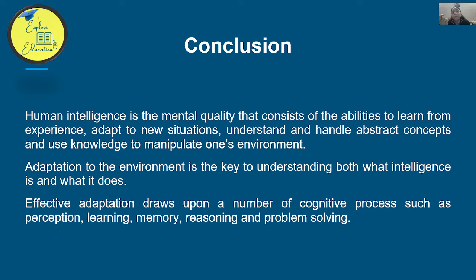Intelligence involves the ability to adapt to new situations — for example, when COVID came, people shifted from offline to online. Intelligence also includes the ability to think abstractly — abstract concepts that we cannot see but can reason about, such as geometric figures. It also involves using knowledge to manipulate one's environment.